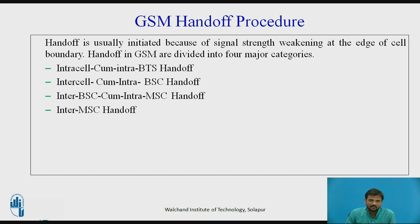The first category is intra-cell or intra-base station handoff. This type of handoff is necessary when high interference occurs during the call. The channel for the connection is changed within the cell by moving to another frequency of the same cell or to another time slot of the same frequency. The handoff process is initiated by the base station.